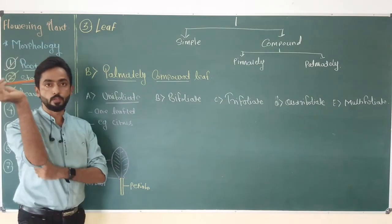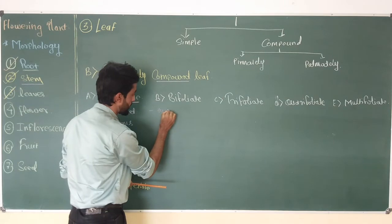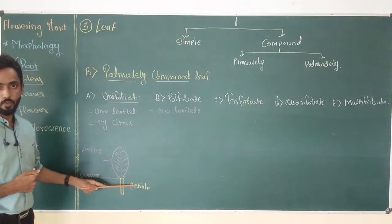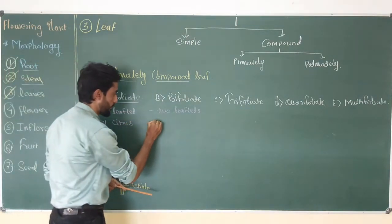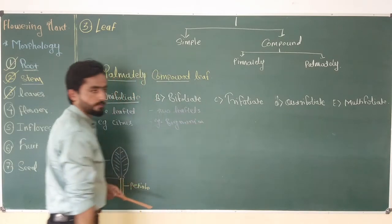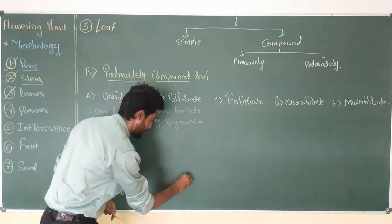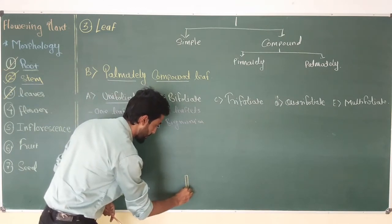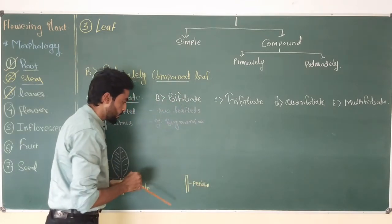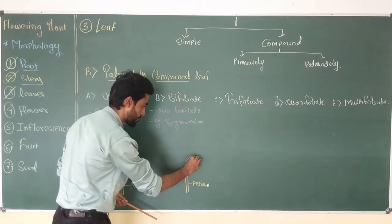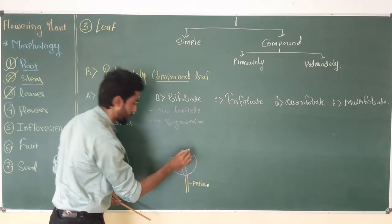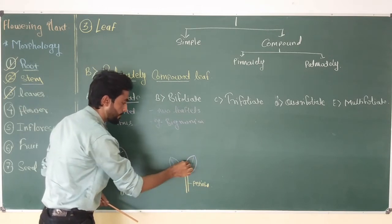The next type of leaf is bifoliate. In this case, two leaf plates are present attached at a common point on the petiole. A well-known example of this type of leaf is bignonia plant. In the diagram, you draw the petiole, and at a common point on the petiole two leaf plates are attached. Every leaf plate shows a mid-rib and branches.